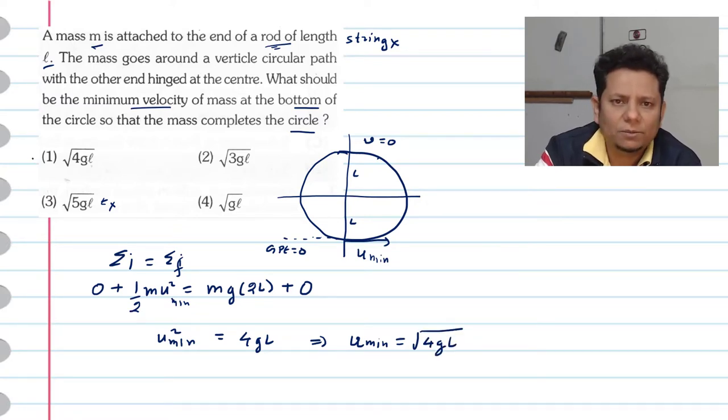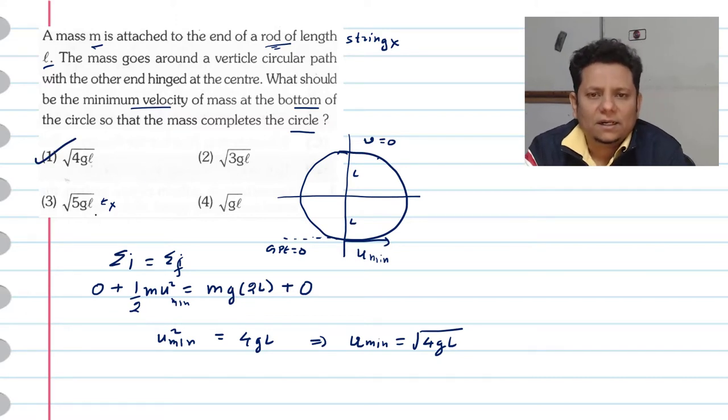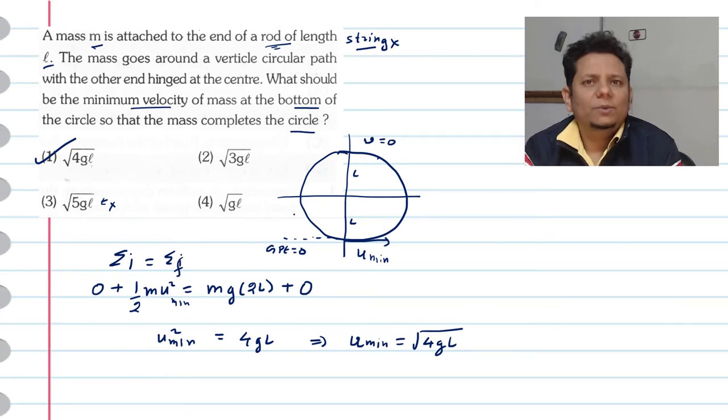That means option number 1 would be the right answer. Under root 5GL is when it comes to string. I hope you understand this solution.